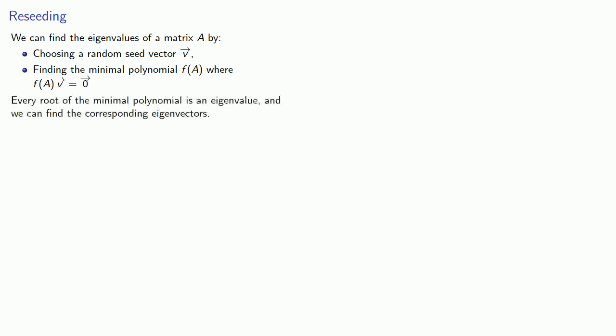We can find the eigenvalues of a matrix A by choosing a random seed vector v, finding the minimal polynomial f where f applied to v gives us the zero vector. Now every root of the minimal polynomial is an eigenvalue, and we could use these to find the corresponding eigenvectors.